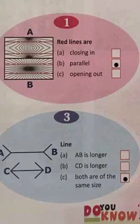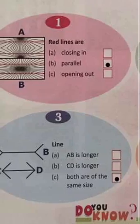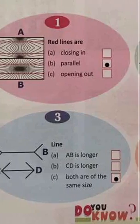Let's go to exercise 1. In figure 1, we have red lines in box A and box B. In box A, the red lines are closing in, and in box B, they are opening out. But do you know what the reality is? Both boxes have lines which are parallel to each other. This is called optical illusion.